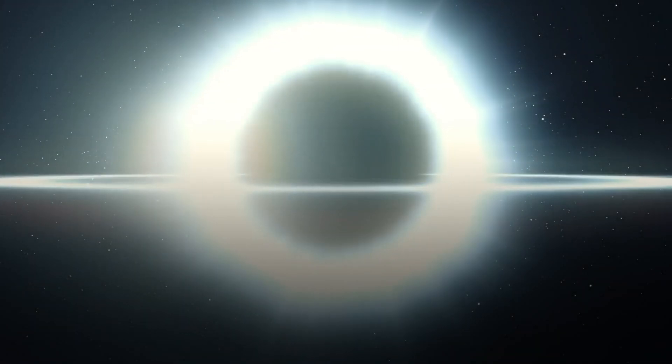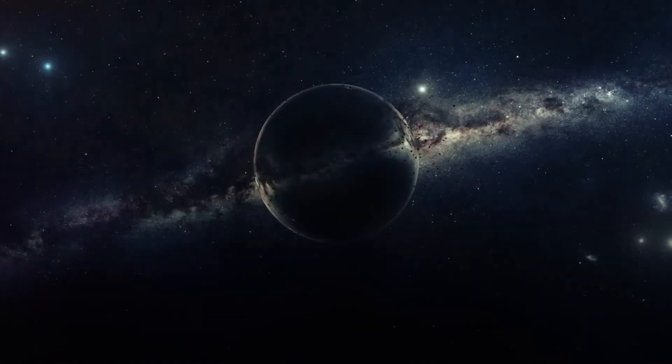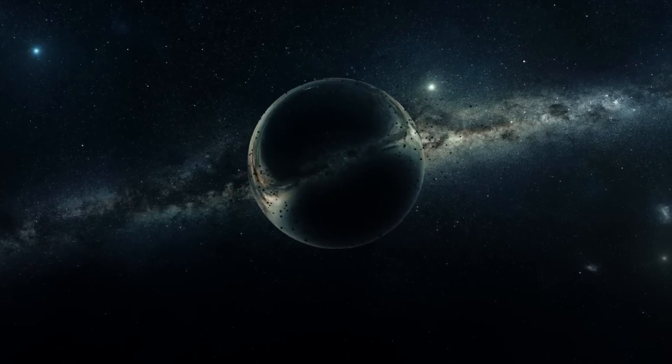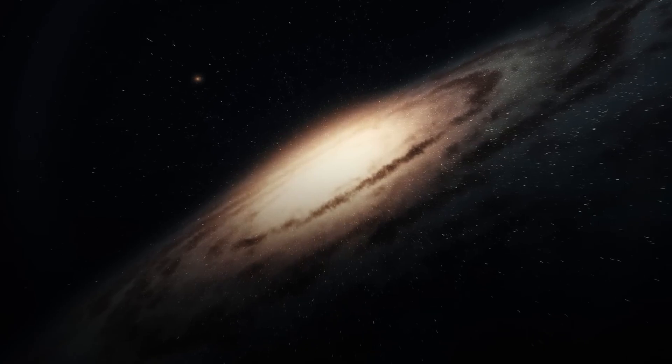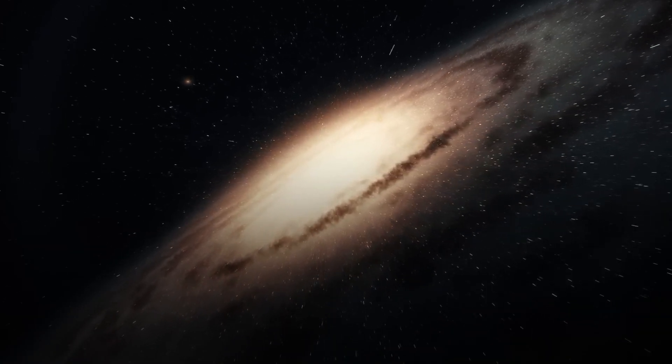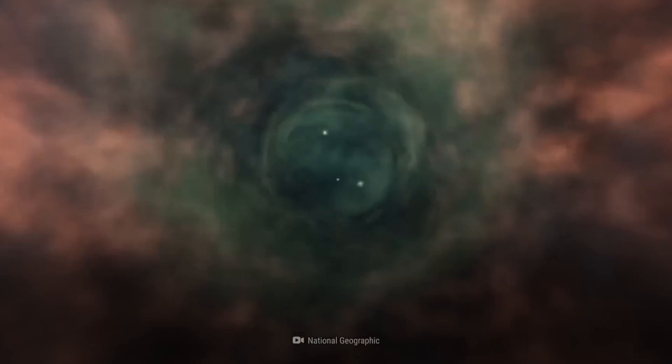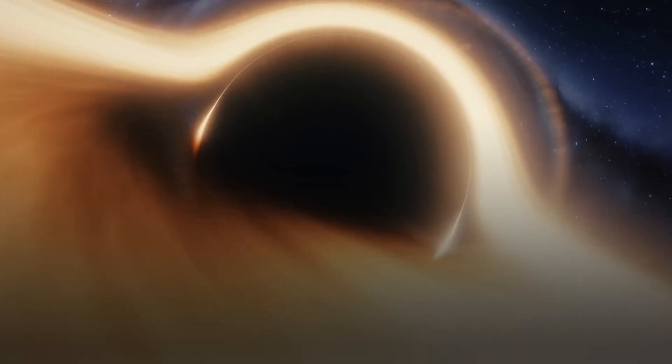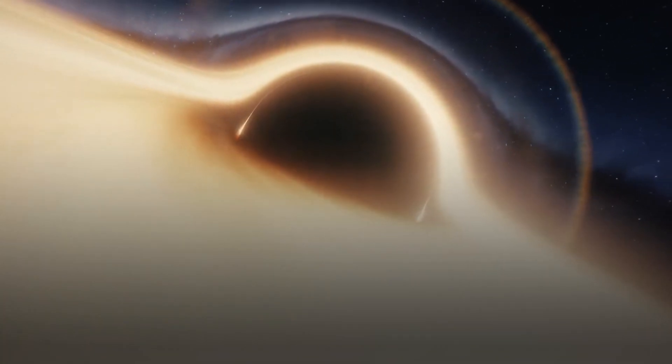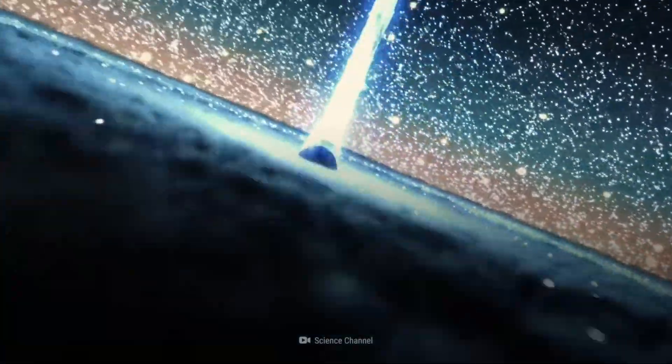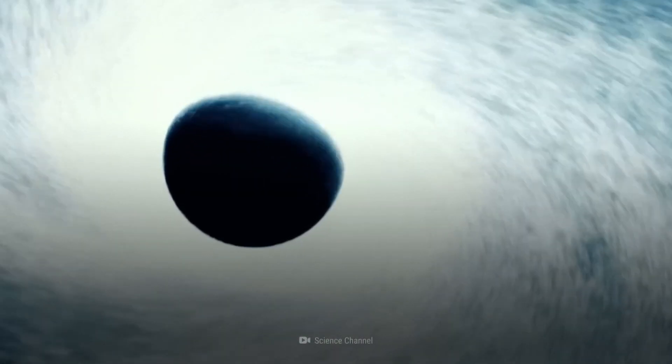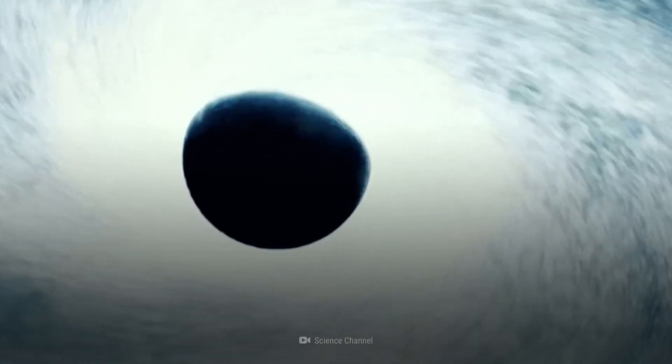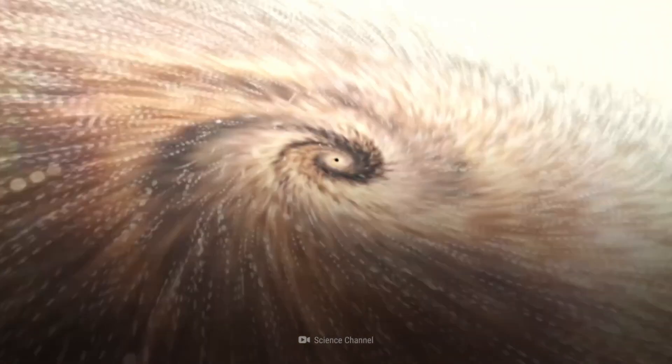So what exactly is a black hole? At its most basic, a black hole is a region of space where the gravitational pull is so strong that nothing, not even light, can escape from it. This is because black holes are made up of extremely dense, compact matter, often the remnants of a collapsed star. When a star dies and collapses, it can become so dense that its gravity becomes overwhelming, pulling everything inward and forming a black hole.